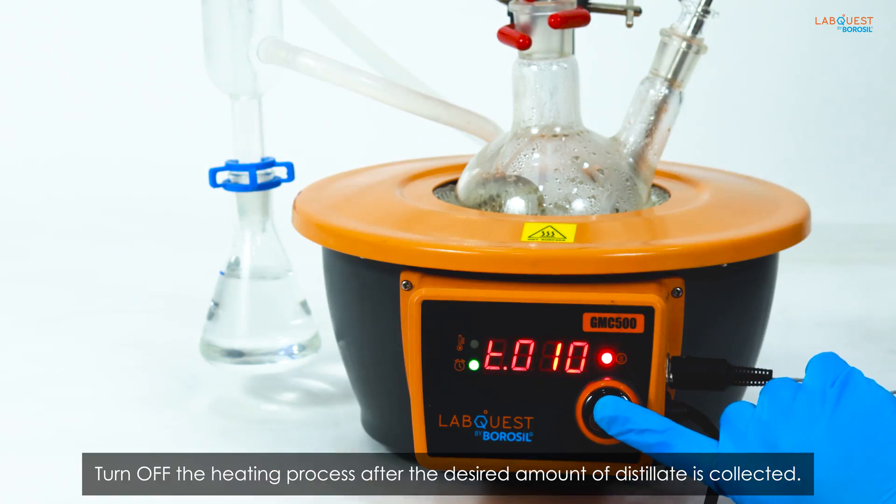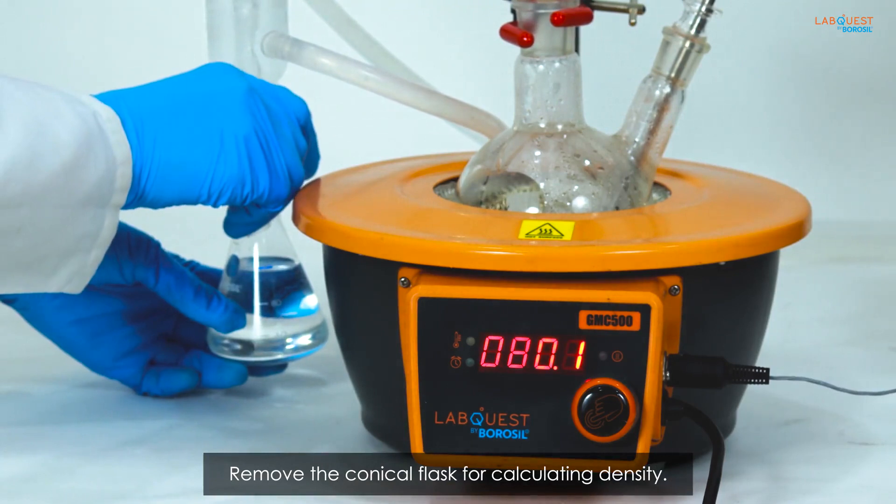Turn off the heating process after the desired amount of distillate is collected. Remove the conical flask for calculating density.